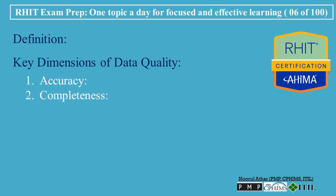2. Completeness. Data is considered complete when all required information is present. Incomplete records can hinder clinical decision-making, resulting in delayed or inappropriate care. For example, missing lab results can affect a clinician's diagnosis.